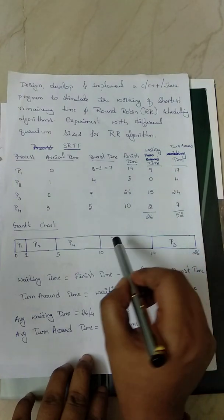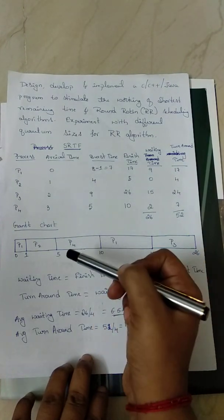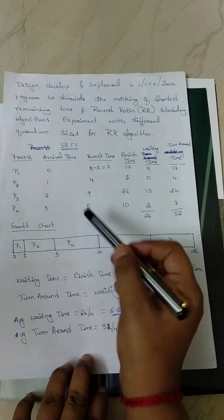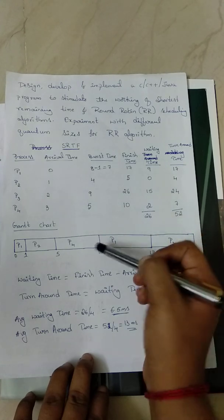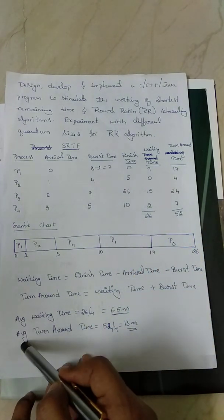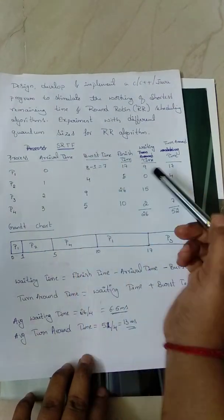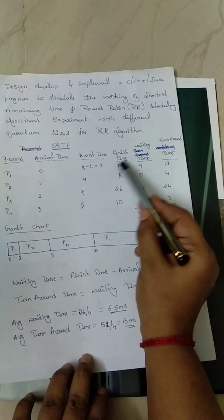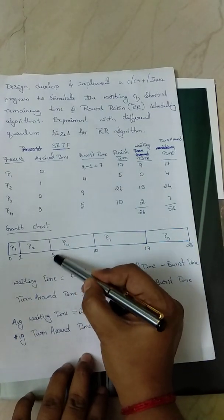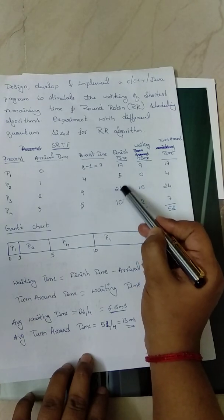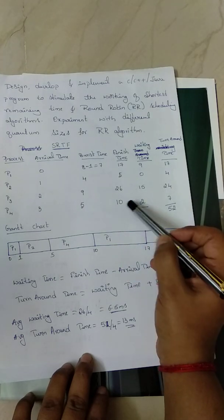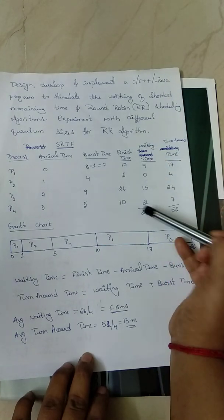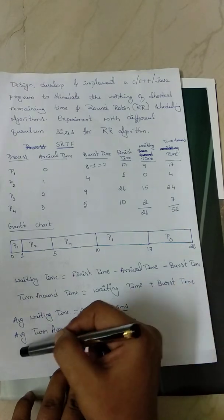Once we have the Gantt chart, we can find the finish time at which each process completes its execution, as well as the waiting time and turnaround time of each process. At the end we calculate the average waiting time and average turnaround time for the SRTF algorithm. Finish times: P1 completes at t=17, P2 at t=5, P3 at t=26, and P4 at t=10. Now we find the waiting time of each process.